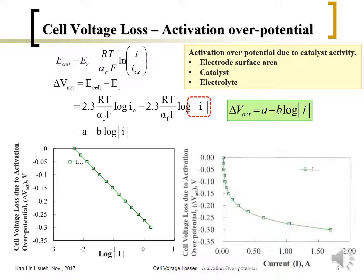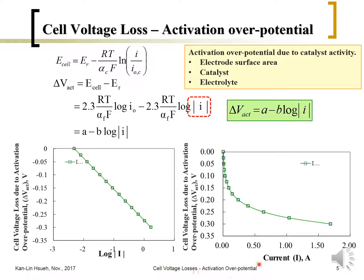By plotting on a log scale for current, you can extract all kinetic parameters α and I₀. A unique characteristic of activation overpotential is that at smaller current density it drops very quickly, but at higher current density it drops much more slowly — due to the logarithmic nature. At higher current density, the behavior appears nearly linear, which people might mistake for internal resistance, but it is actually activation overpotential.